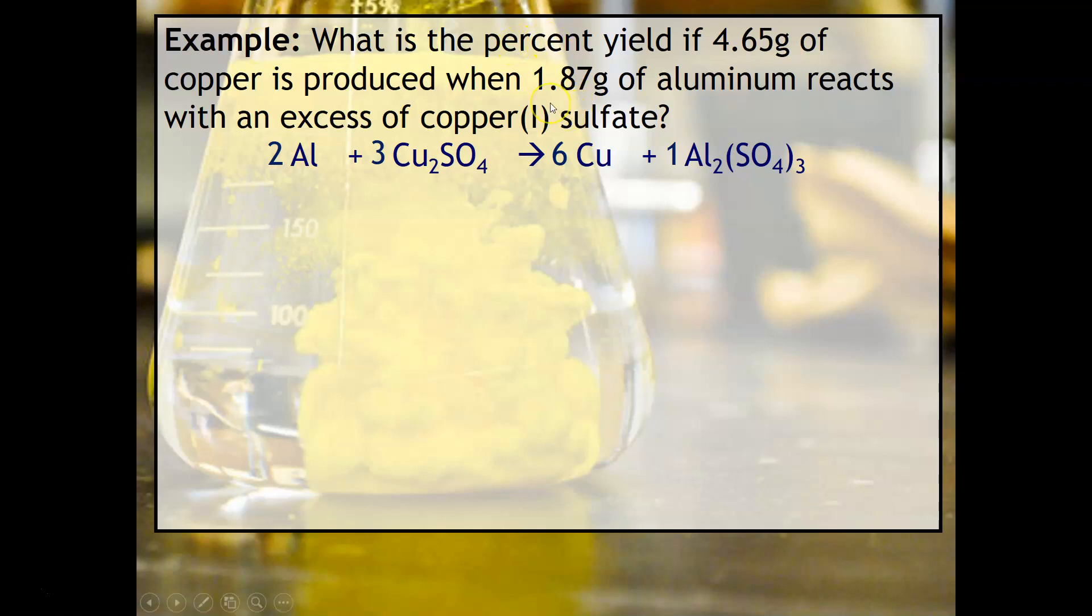Notice I give you 1.87 grams of aluminum. That is a reactant, so that obviously can't go in our percent yield calculation.